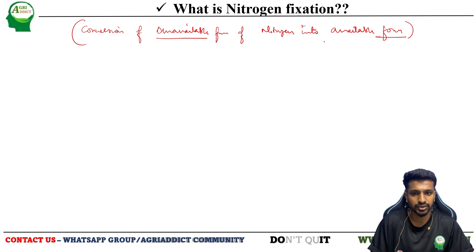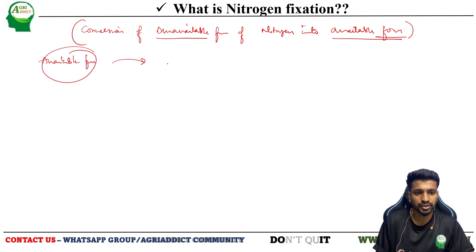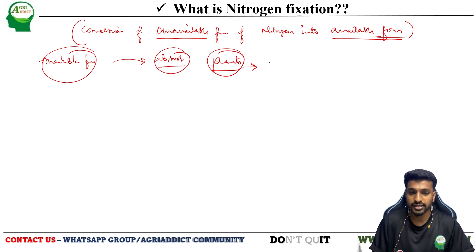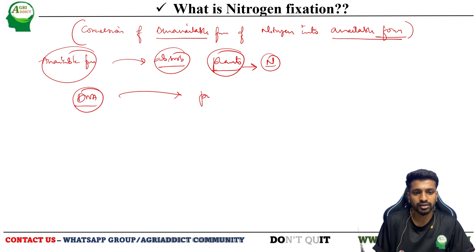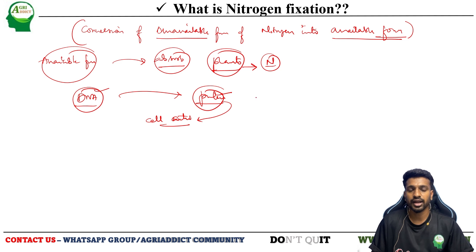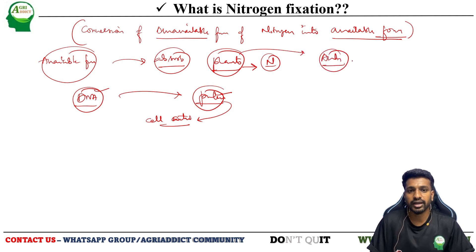Nitrogen fixation is the conversion of the unavailable form of nitrogen into the available form. Only when nitrogen is in the available form can plants absorb it. Why do plants actually require nitrogen? Starting from DNA to proteins, amino acids, enzymes, and for all cellular activities, nitrogen is an integral molecule. Starting from DNA to protein and also for various cellular activities, nitrogen plays a very crucial role.